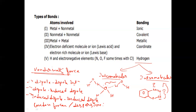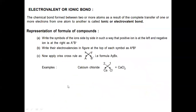Now we will discuss strong bonds one by one. There are four types of strong bonds. The first one is the electrovalent or ionic bond. It is a chemical bond formed between two or more atoms as a result of complete transfer of one or more valence electrons from one atom to another atom.